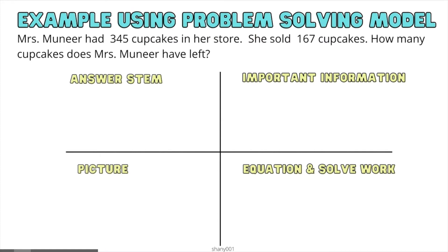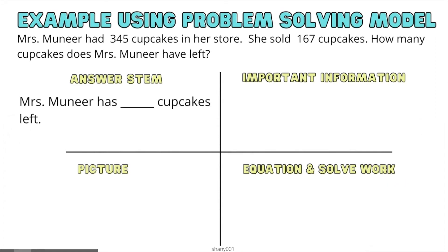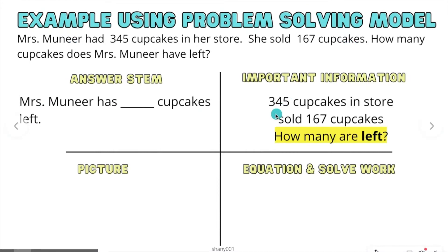Let's go ahead and use our problem-solving model to solve the problem. First step: make your four squares — answer stem, important information, picture, equation, and solve. The answer stem: how many cupcakes does Mrs. Muneer have left? Mrs. Muneer has blank cupcakes left. Now let's look at what we know: she had 345 cupcakes in the store, she sold 167 cupcakes, and we need to figure out how many are left.